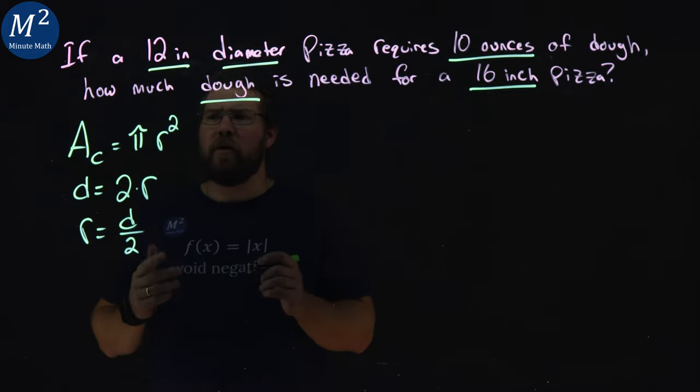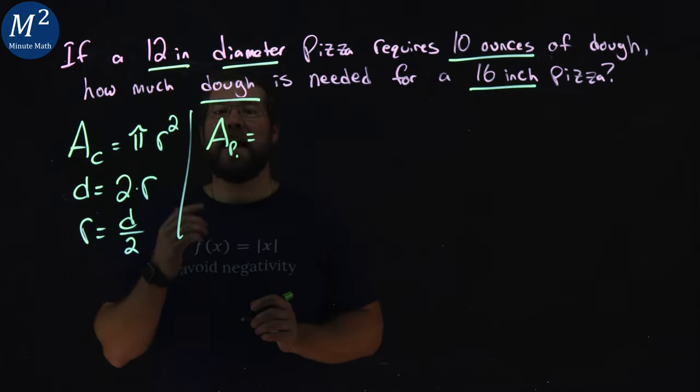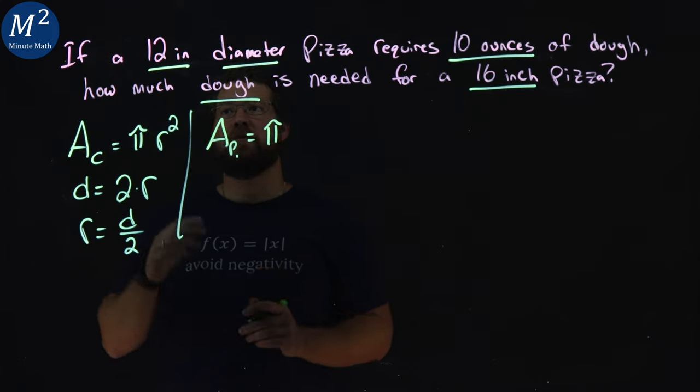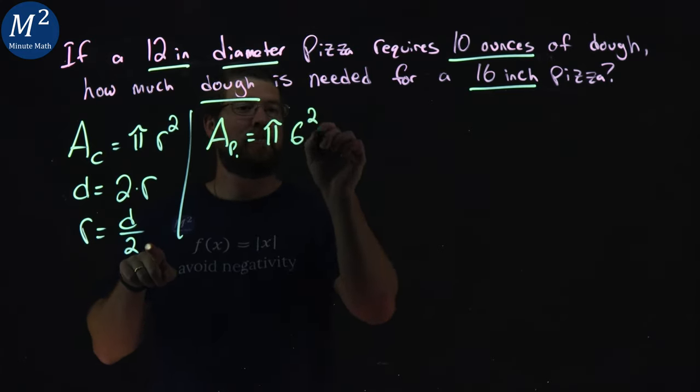So, let's go with our area of our first pizza, pizza 1. They tell us here that it's 12-inch diameter. So, we have pi times 12-inch diameter. Divide that by 2 gives us the radius, which is 6 squared.